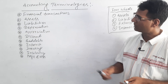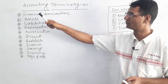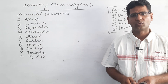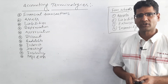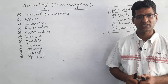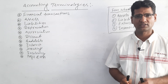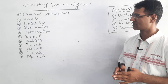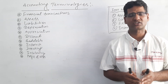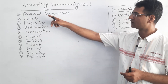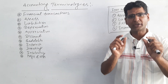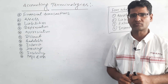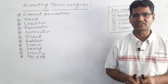The first term of the accounting process is financial transactions. In the accounting system, we as businessmen, accountants, or teachers discuss about financial transactions or activities. Those activities which are related to money or money's worth are called financial transactions, financial activities, or financial events.